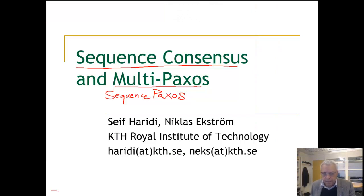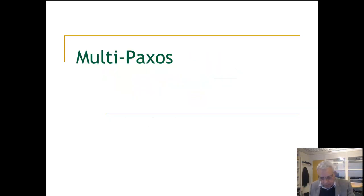Hello again. Now that we understand the specification of sequence consensus, we are going to look at an algorithm that takes us from single-value Paxos to a version of multi-Paxos that works on sequences. We call it sequence Paxos. This transformation will be quite straightforward and easy to understand once you understand single-value Paxos. So let us look at multi-Paxos and sequence Paxos.